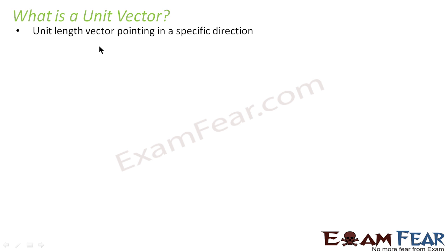So let us see what is a unit vector. A unit vector is a unit length vector pointing in a specific direction. What do you mean by unit length? The term unit itself means one. So a vector whose length is one and which points in a particular direction is known as a unit vector.